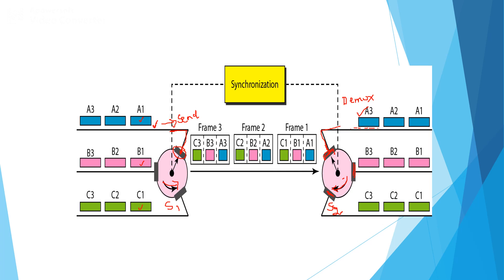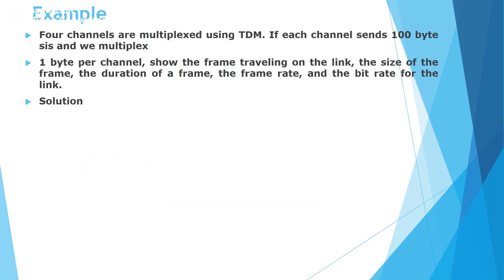While choosing the switches, we have to maintain synchronization. That means both switches need to rotate with the same speed but in the opposite direction. Problem: Four channels are multiplexed using TDM. If each channel sends 100 bytes and we multiplex 1 byte per channel, show the frame traveling on the link, the size of the frame, the duration of a frame, the frame rate, and the bit rate for the link.